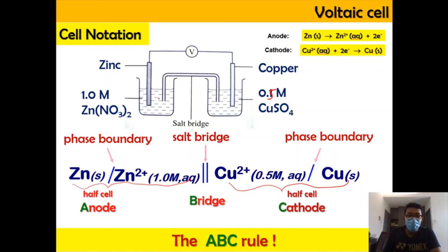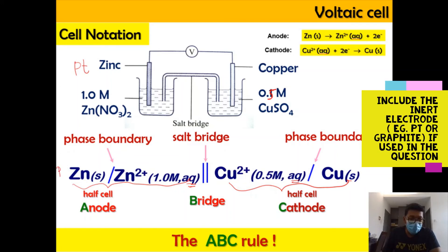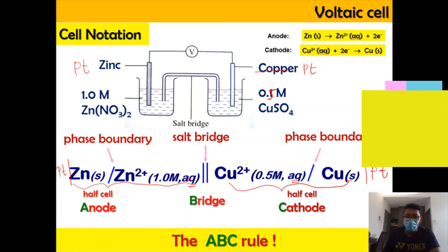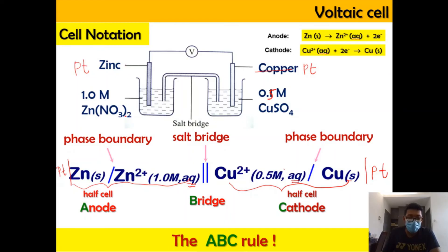We can use the ABC rule to write the cell notation. Make sure to include the concentration and the phase of the ions. If you have an electrode that is different from the species in solution — for example, platinum — you need to include platinum at the start of the anode half or at the end of the cathode half. But in this case, since the electrode and electrolyte are the same species, you don't need to write the electrode separately.